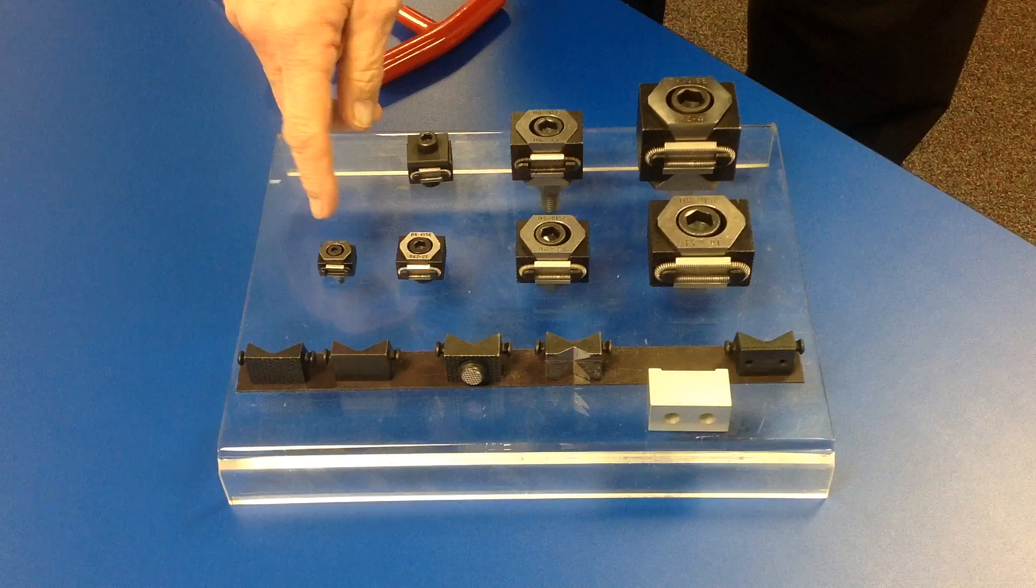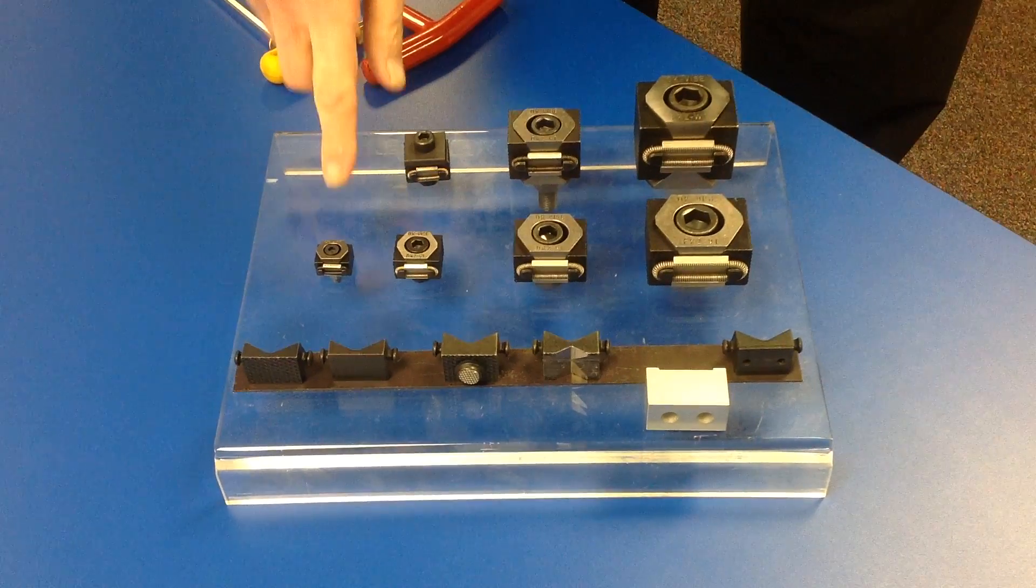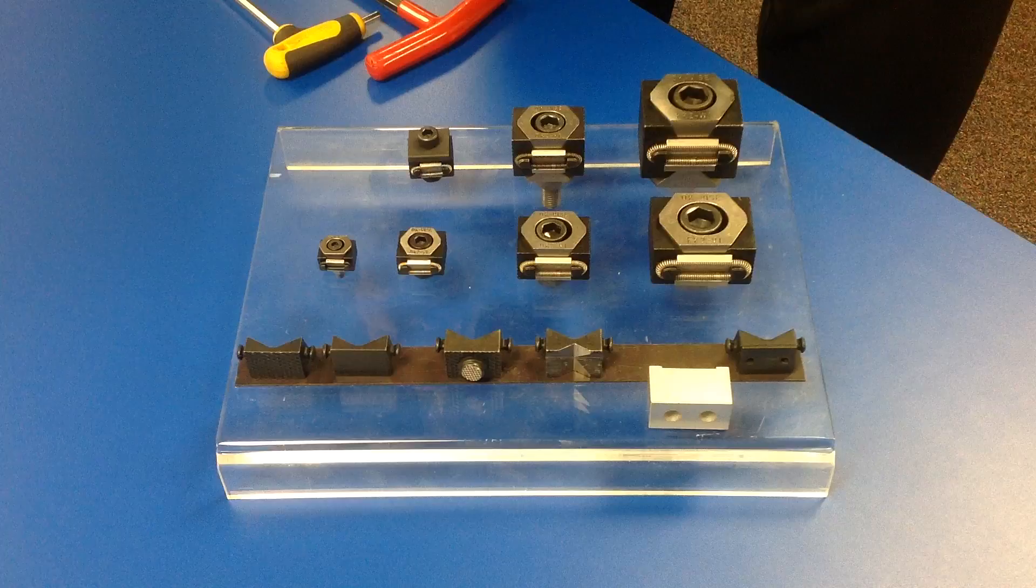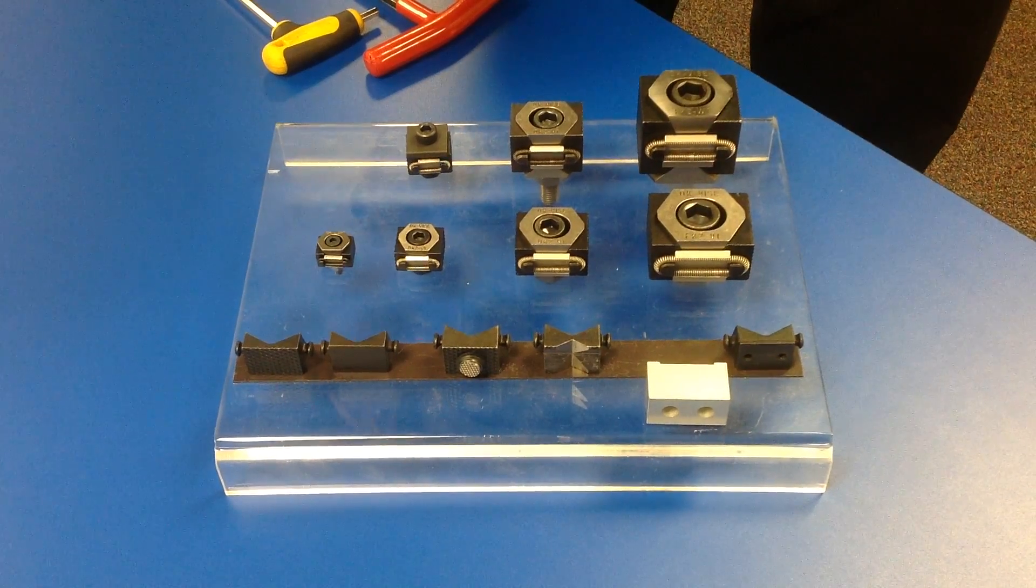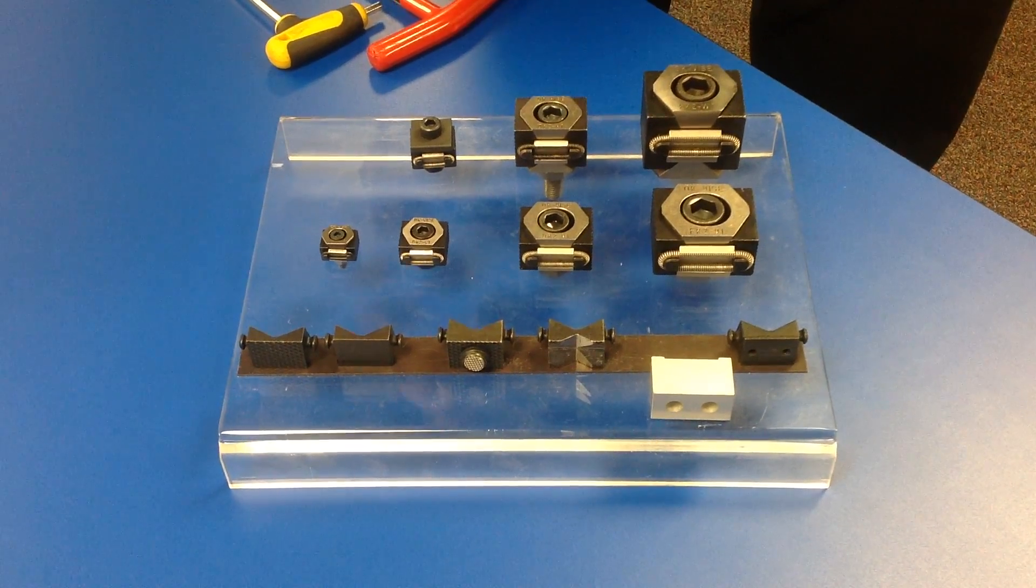In the standard components, we have what we call the A size, which is our smallest. It's only available in the economy model, which means it does not have ground components inside of it.